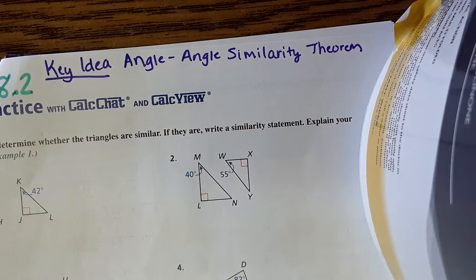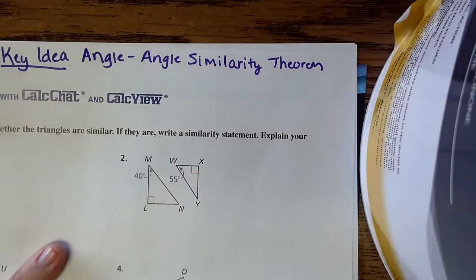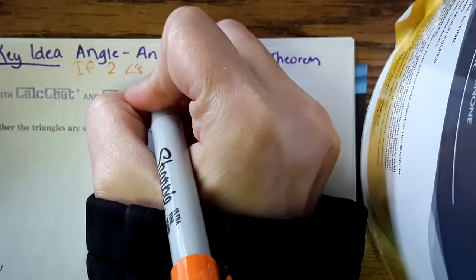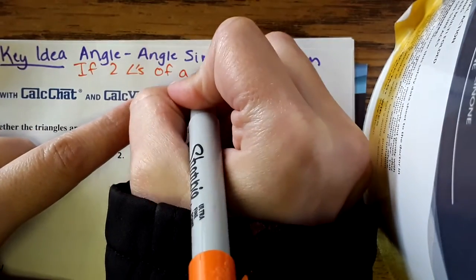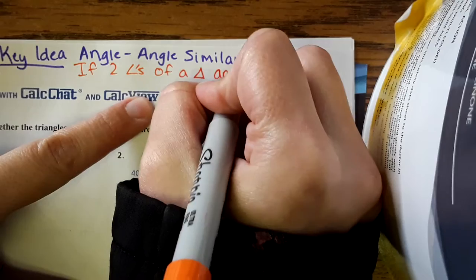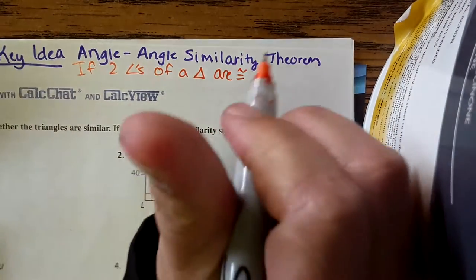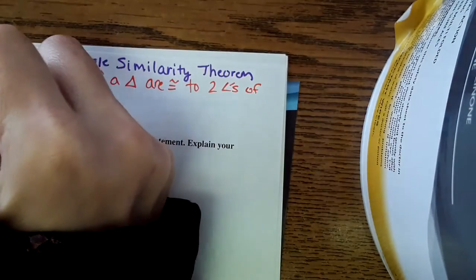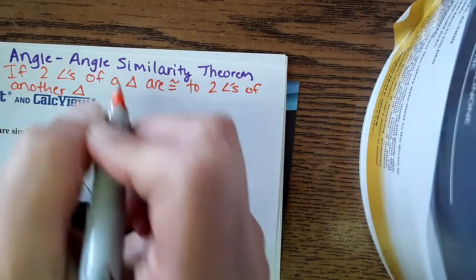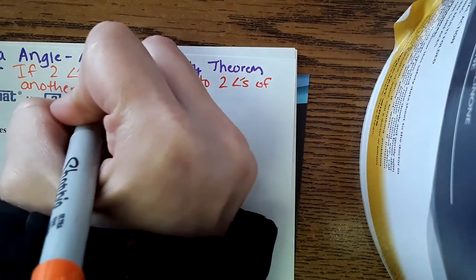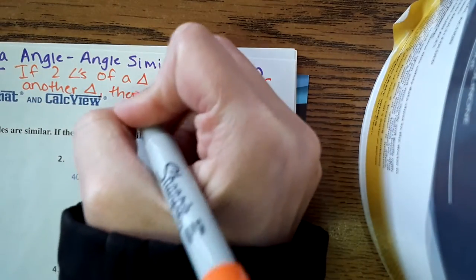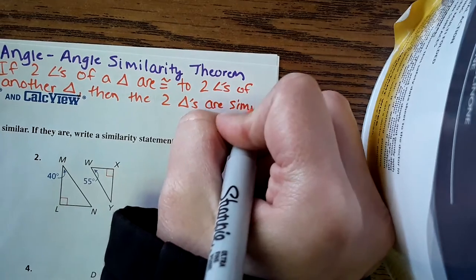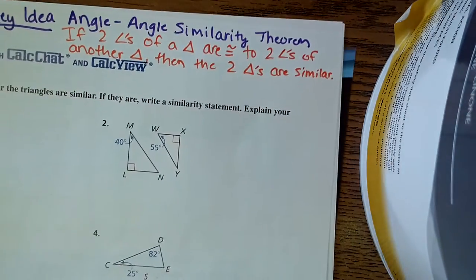The Angle-Angle-Similarity Theorem, and I'm going to abbreviate like crazy because why not? If two angles of a triangle are congruent to two angles of another triangle, then the two triangles are similar, meaning that they are proportional.